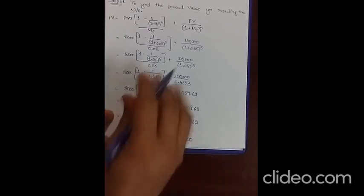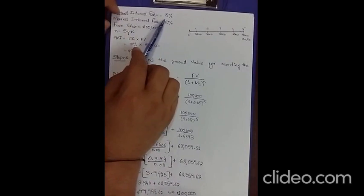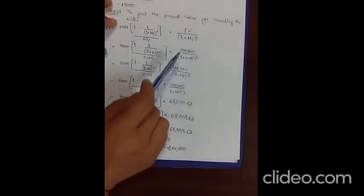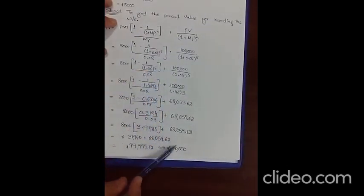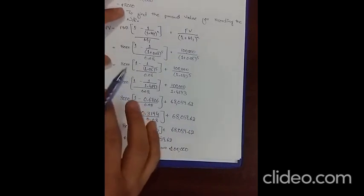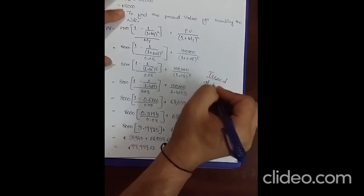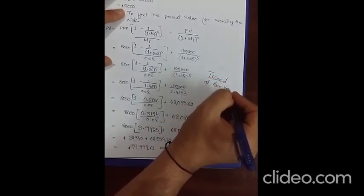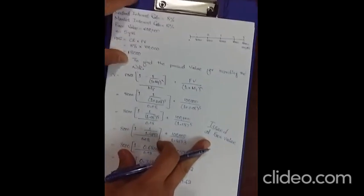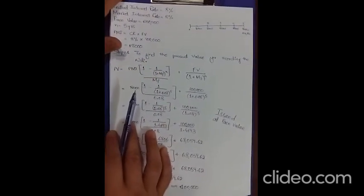Notice that when the market interest rate and contract interest rate are the same, the money you pay today equals the money you expect to receive after 5 years. That is exactly why this is called issued at face — whatever is written as the face value is what you pay today. This equality holds precisely because both interest rates are the same.